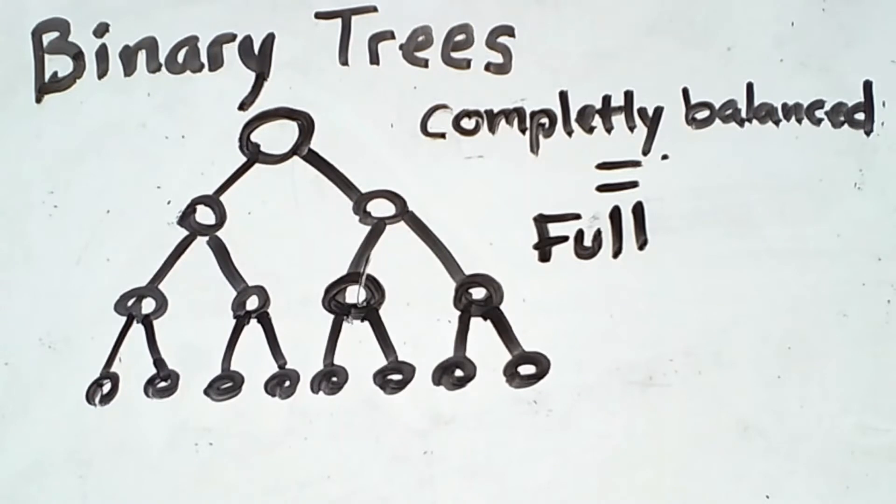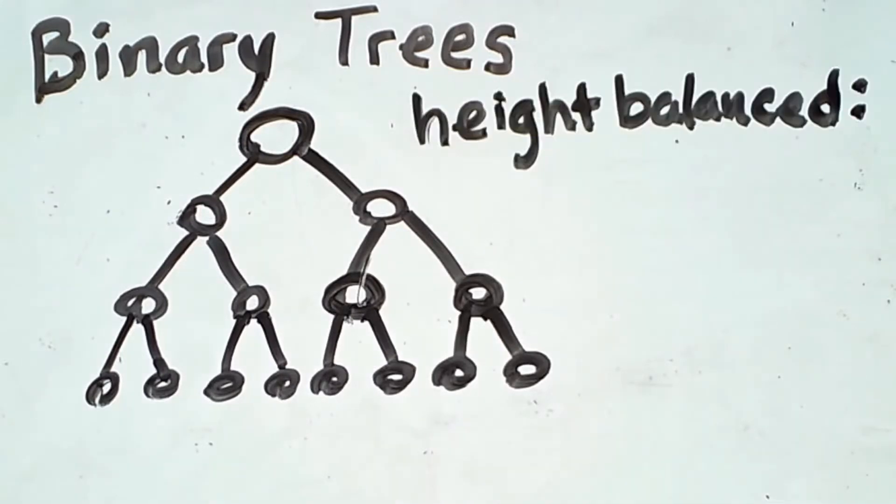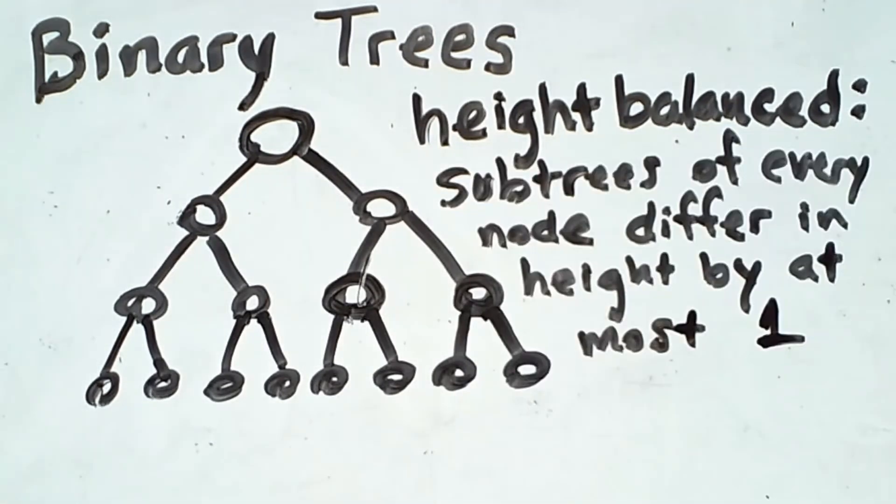A less restrictive type of balance is that of being height balanced. A tree is height balanced if the subtrees of every node differ in height by at most 1. By this definition, completely balanced or full trees are also height balanced.